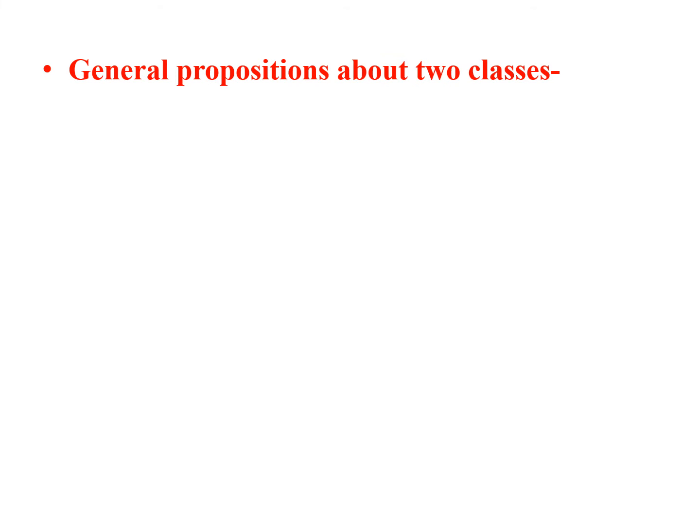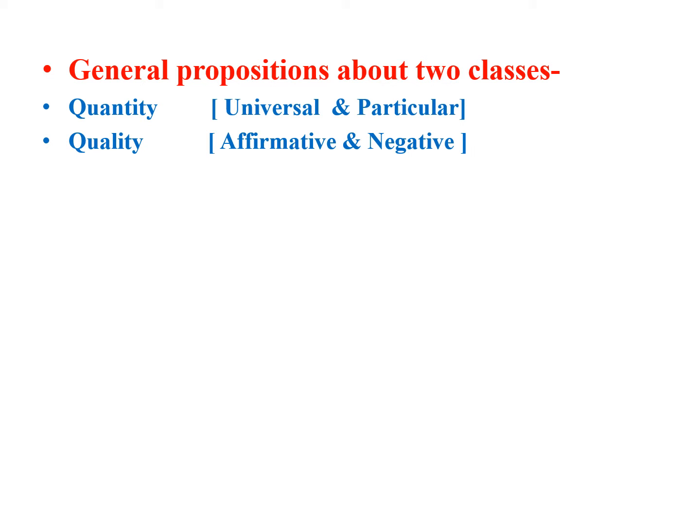Now we will understand general propositions about two classes, also called categorical propositions. Aristotle classified them on the basis of quantity as universal and particular, and on the basis of quality as affirmative and negative. This gives a fourfold classification: A, E, I, and O propositions.